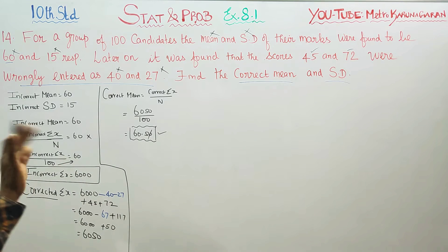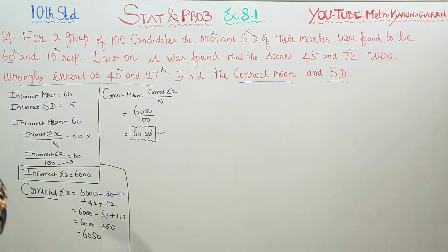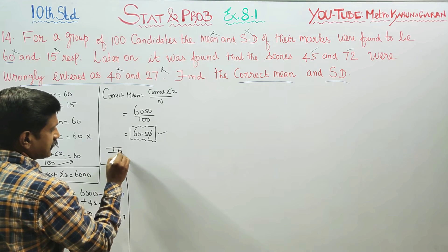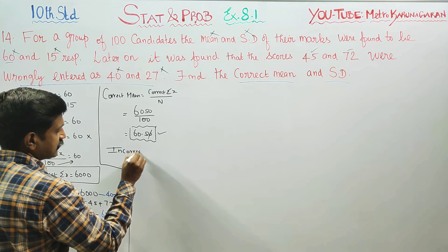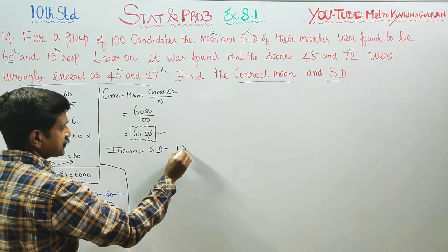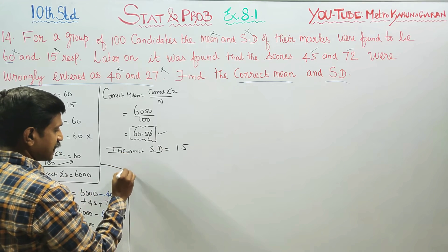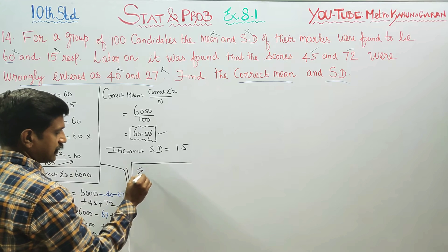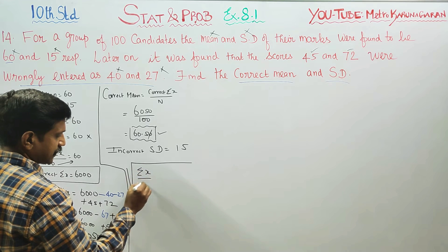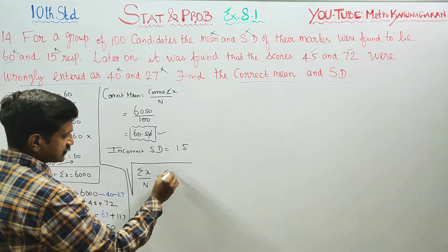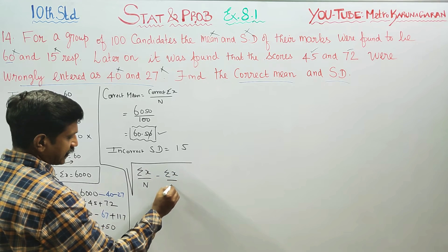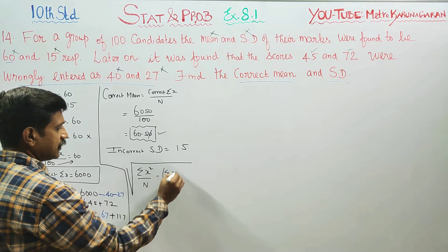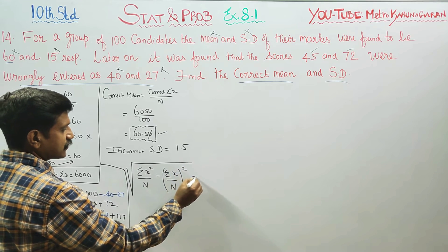Now for standard deviation. The standard deviation formula is: SD equals square root of (Sigma x² by N) minus (Sigma x by N) whole squared, and this is equal to 15. This is the actual formula for standard deviation.